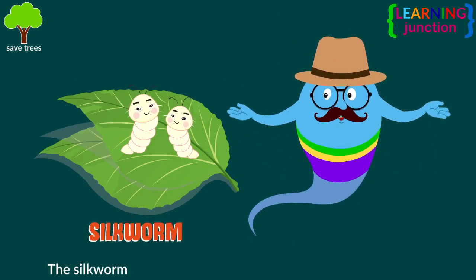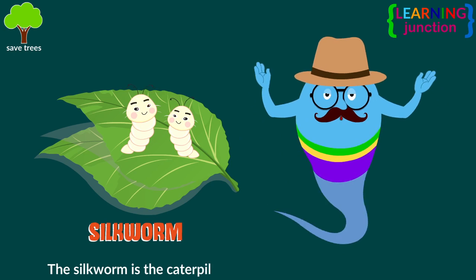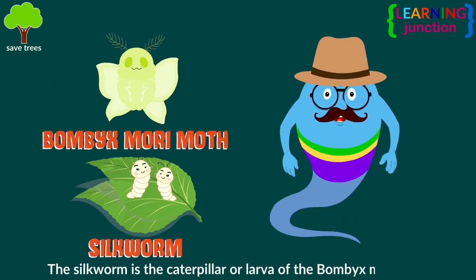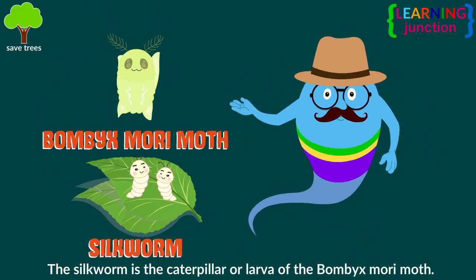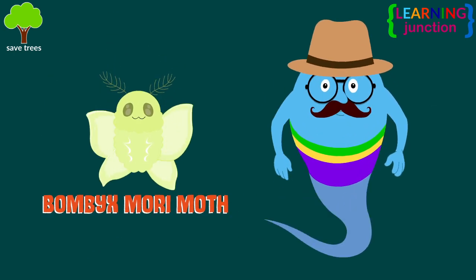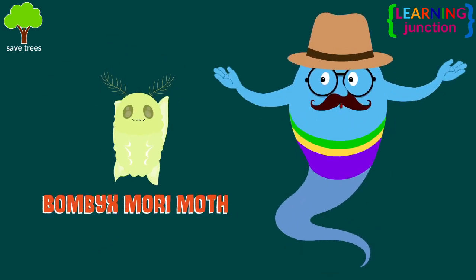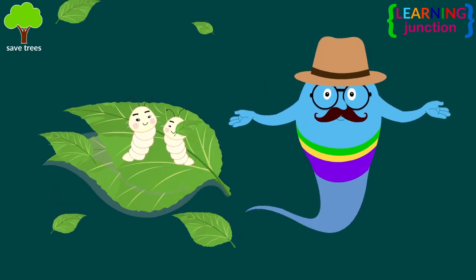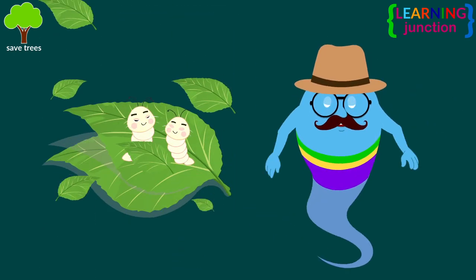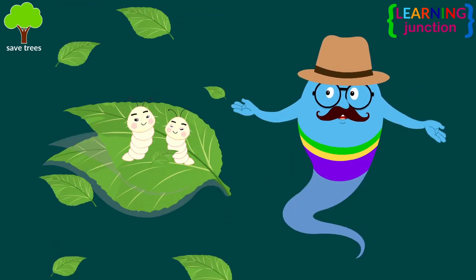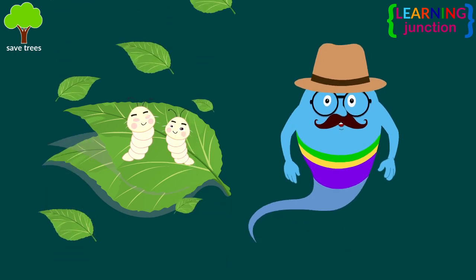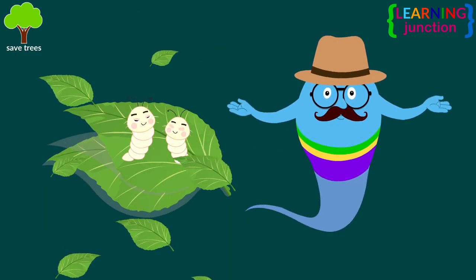The silkworm is the caterpillar or larva of the Bombyx mori moth. Silk is made by the moth, so it is important that silkworms are fed fresh mulberry leaves during their last three weeks of growth.